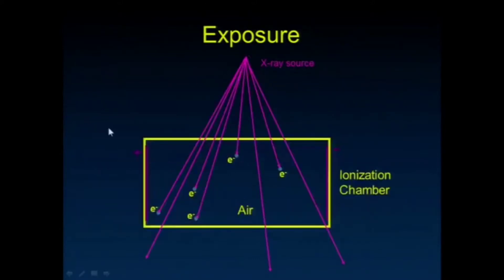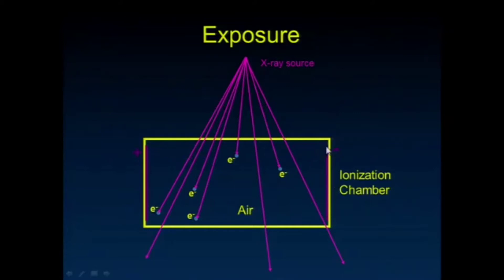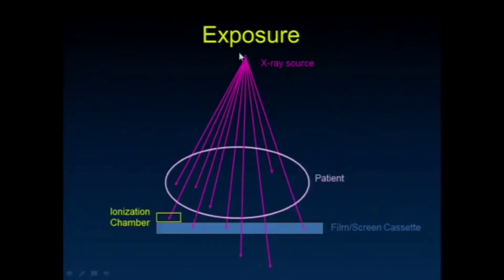You fill a chamber with air, expose it to an x-ray source, and because of interactions where electrons are kicked out of shells, ions are created that flow toward the positively or negatively charged plates — holes versus electrons — and you measure a current flowing through that circuit proportional to the exposure. Early on, this chamber was placed between the patient and the film; when it reached a certain level it could shut off the x-ray equipment, hence the term 'exposure.'